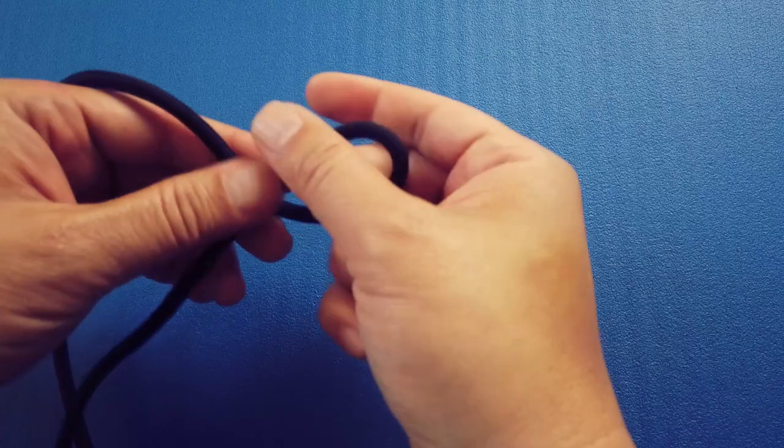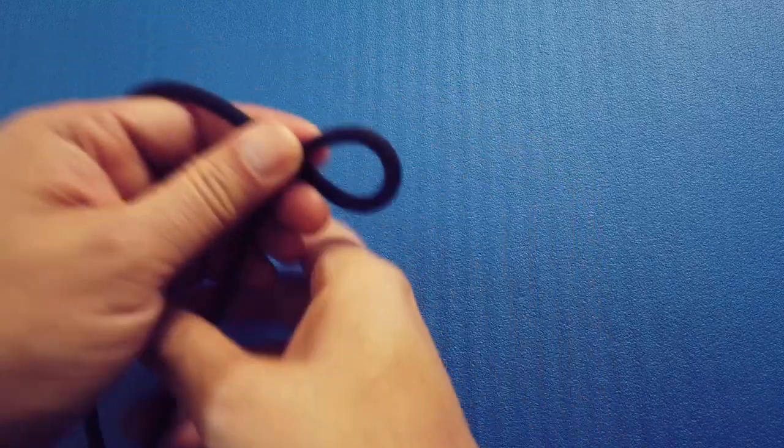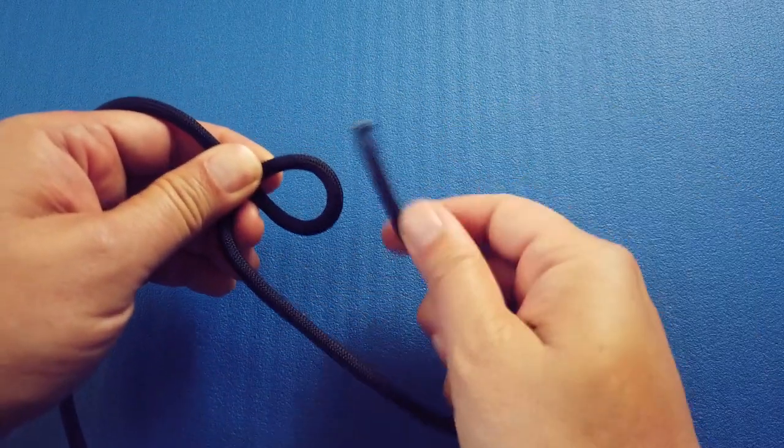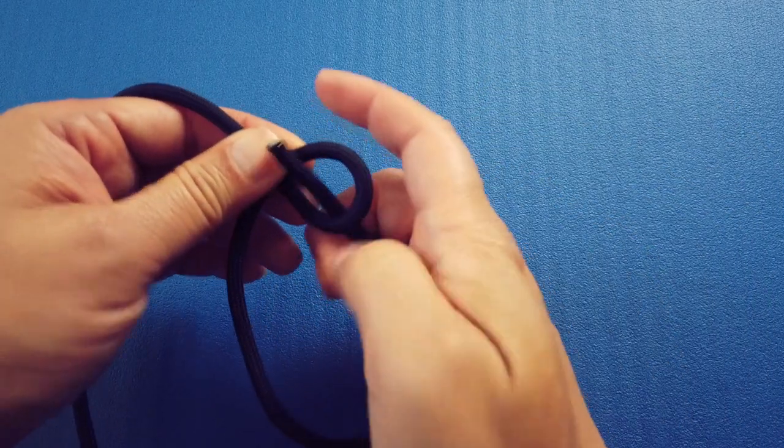Start by making a loop, right over left, keep it pinched. Take your hanging piece of cord, run it through the bottom of the loop and around the back of the main part of your cord.